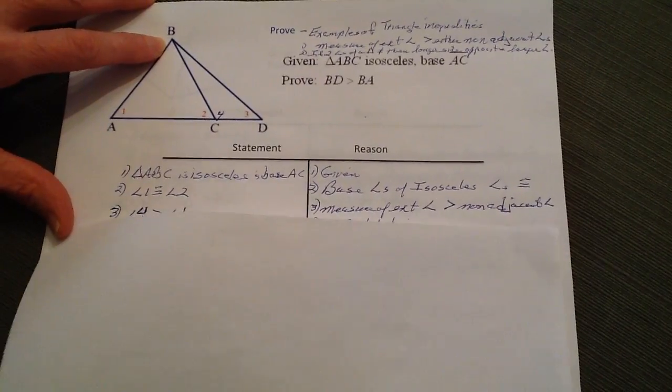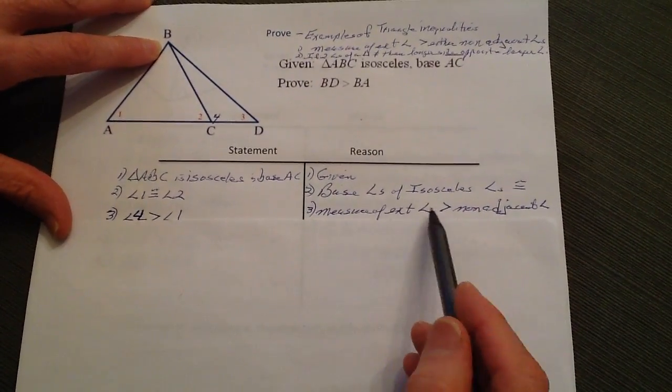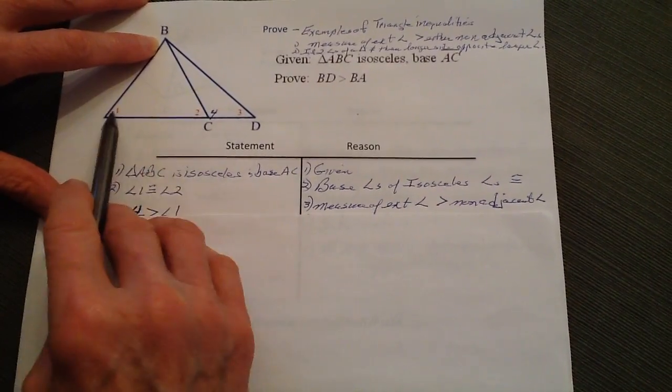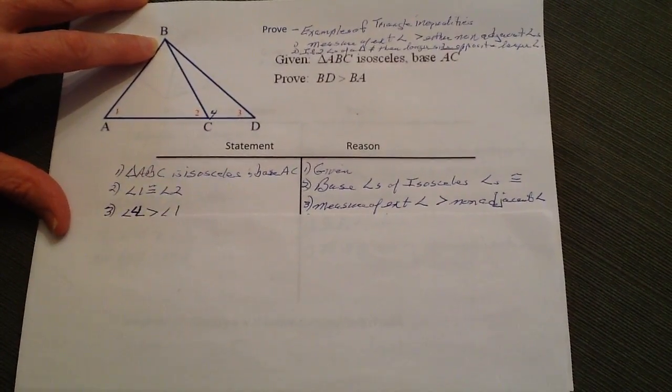And the reason for that is that the measure of the external angle is greater than the non-adjacent angle, in which one is not adjacent to four.